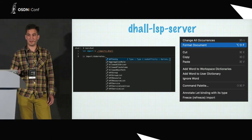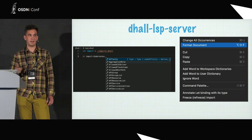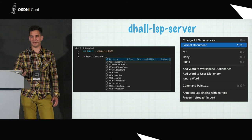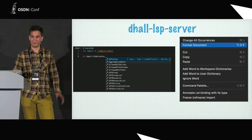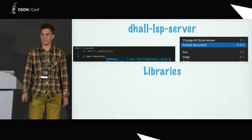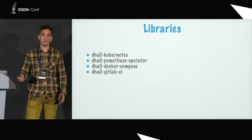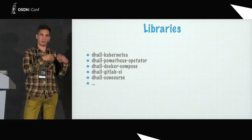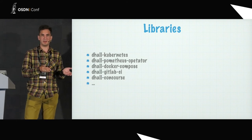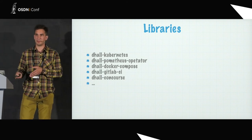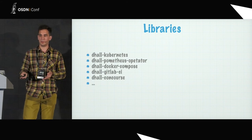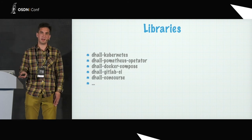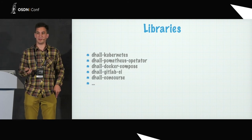There is a Dhall freeze tool which allows annotating expressions with their hashes. The best practice when doing an import is to use a permanent link and then a hash — Dhall freeze just changes HTTP imports into imports annotated with the hash. There is a great LSP server which works with any modern text editor and provides auto-completion, formatting, and freezing. As for libraries, tools are tied to some data format, while libraries provide schemas and types for different services — we used Dhall-to-Kubernetes, and GitLab CI also has a great library, but there aren't so many libraries and their quality and up-to-date status varies.